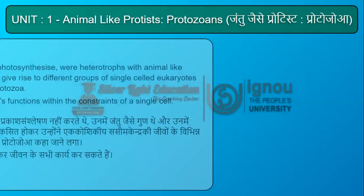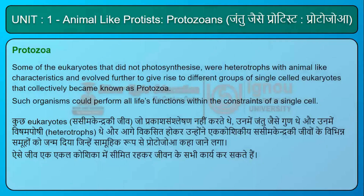Some of the eukaryotes that did not photosynthesize were heterotrophs with animal-like characteristics and evolved further to give rise to different groups of single-celled eukaryotes that collectively became known as protozoa. Such organisms could perform all life's functions within the constraints of a single cell.